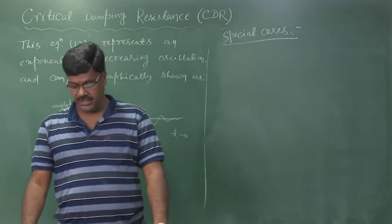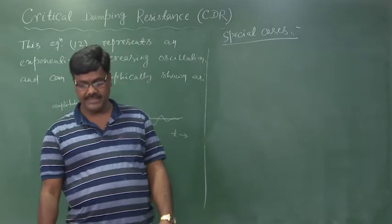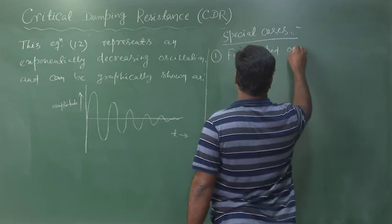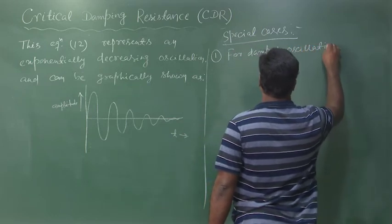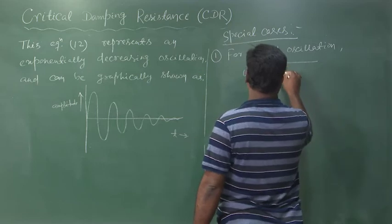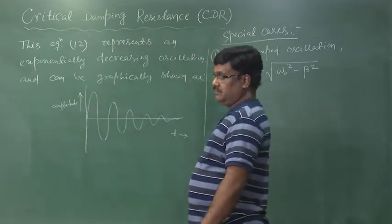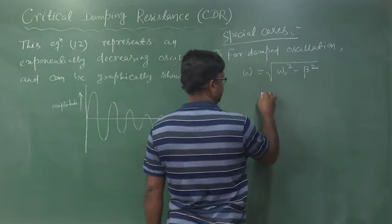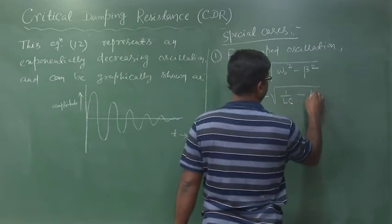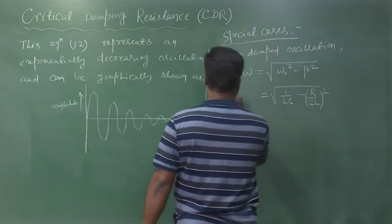Let us discuss the three probable special cases from which we can find the value of CDR. For Case 1, damped oscillation, we have shown that ω = √(ω₀² − β²), and since ω₀ = 1/√(LC) and β = R/2L, this becomes ω = √(1/LC − (R/2L)²).